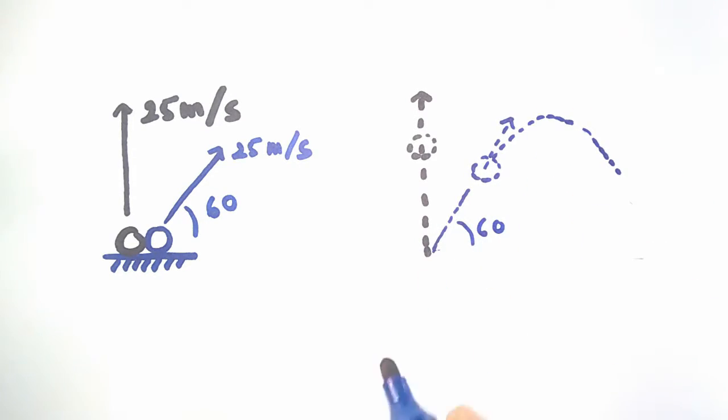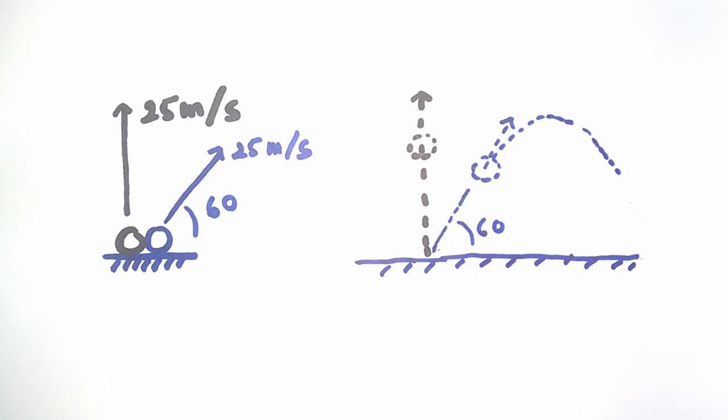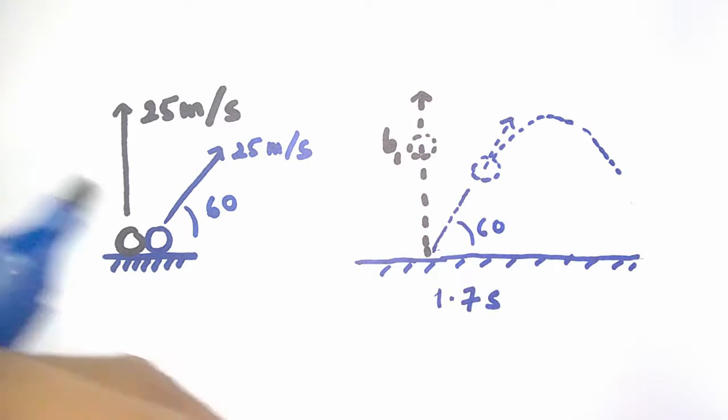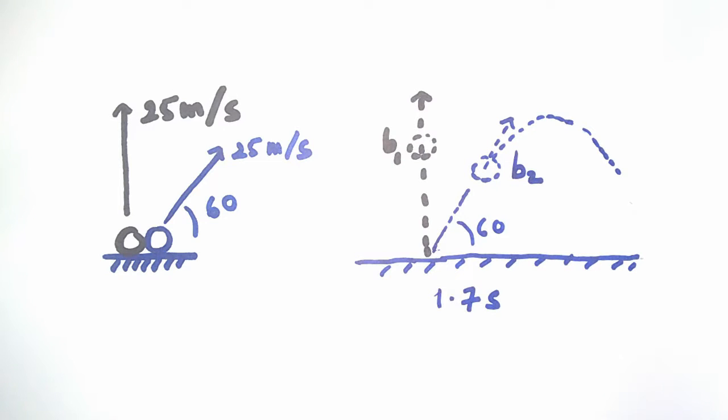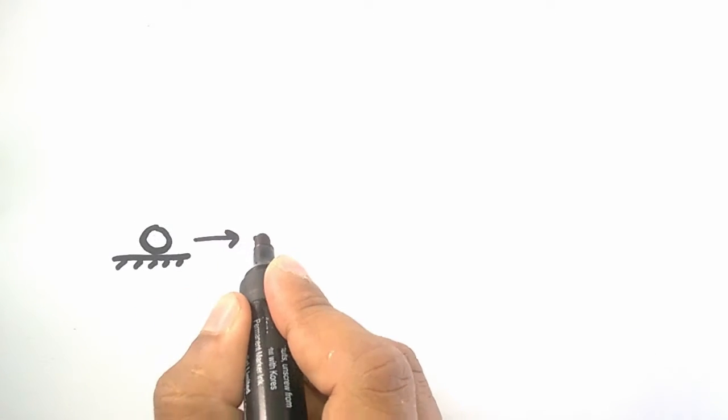Let us assign names for these balls, say B1 and B2. Ball B1 is thrown vertically and ball B2 is thrown at 60 degrees from the horizontal. Now ball B1 will have no movement in horizontal direction.